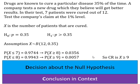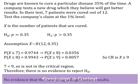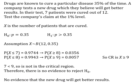Is our test statistic in the critical region? Seven patients were cured. The critical region is X ≥ 9, and 7 is less than 9, so it is not in the critical region. Therefore there is no evidence to reject H₀. In context, we can say there is no evidence that the new drug will get better results. And so hopefully that gives you an idea of how we use hypothesis tests for upper tailed test problems.